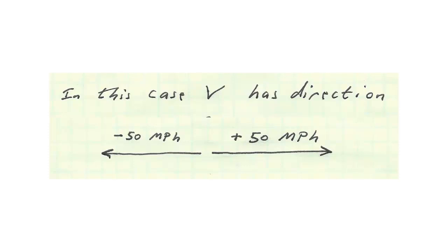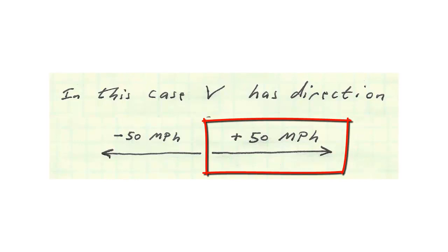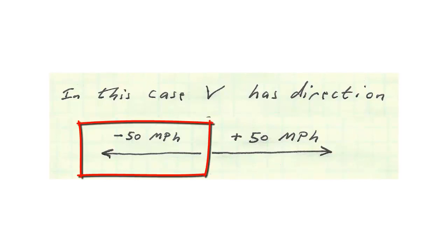When thinking about momentum, you have to remember that velocity has direction. When you're driving on the highway at 50 miles an hour, you don't care what direction you're going. But when dealing with momentum, that velocity has a direction. So if we throw something at 50 miles per hour to the right, we'll say it's going plus 50 miles per hour. If we throw it to the left, or backwards off the back of the boat, then we'll say it's going minus 50 miles per hour.